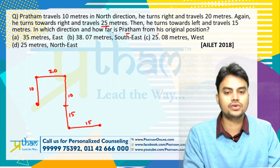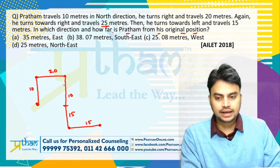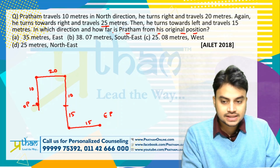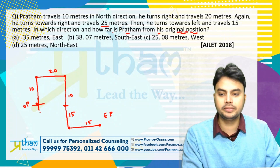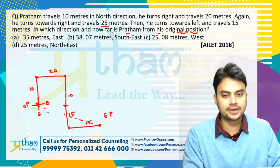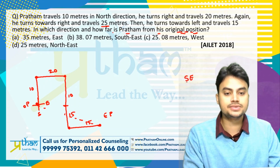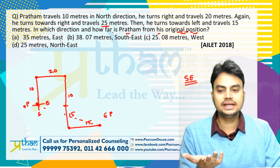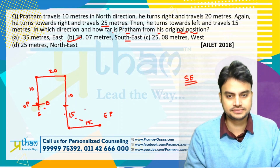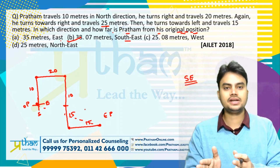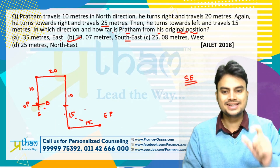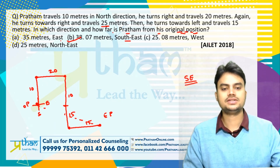Now the question is asking: in which direction and how far is Pratham from his original position? The original position is this point and the ending point is this one. If we draw a compass with respect to the original position, east is this direction and south is this direction. The ending point is coming between south and east, so definitely my answer will be south-east. Since one option is east, one is south-east, one is west, and one is north-east — definitely the answer will be B. There is no need to calculate the shortest distance. So first we find the direction, then the shortest distance. In most cases, finding the direction alone will give us the answer. This question was asked in ELEC 2018.